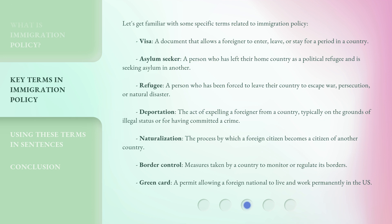Deportation: the act of expelling a foreigner from a country, typically on the grounds of legal status or for having committed a crime. Naturalization: the process by which a foreign citizen becomes a citizen of another country. Border control: measures taken by a country to monitor or regulate its borders. Green card: a permit allowing a foreign national to live and work permanently in the U.S.